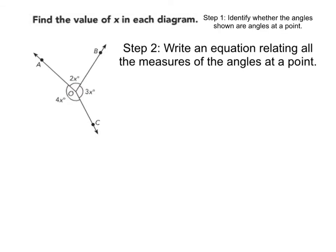Our next step is going to be to write an equation relating all of the measures of the angles at the point. So we have the measure of angle BOC, which is here, plus the measure of angle AOB, which is here, and then we have the measure of angle AOC. And we know that these will all equal 360 degrees.